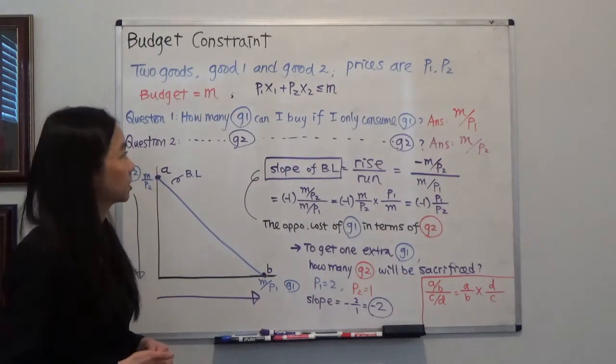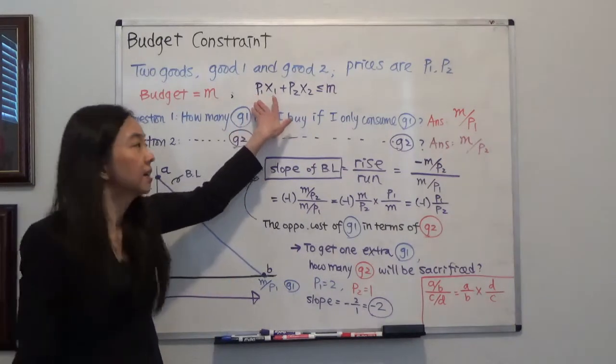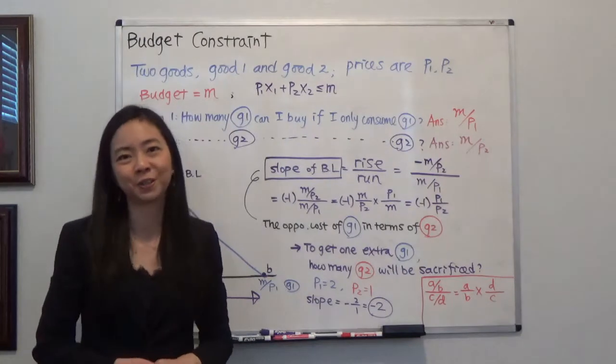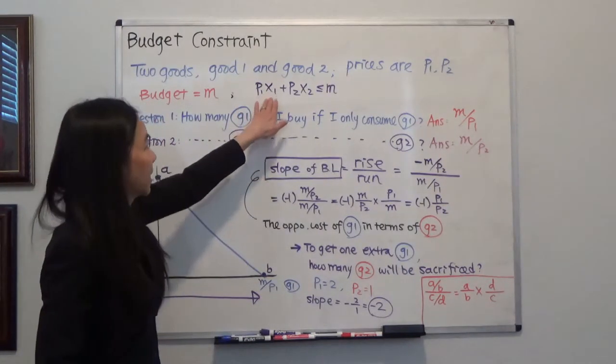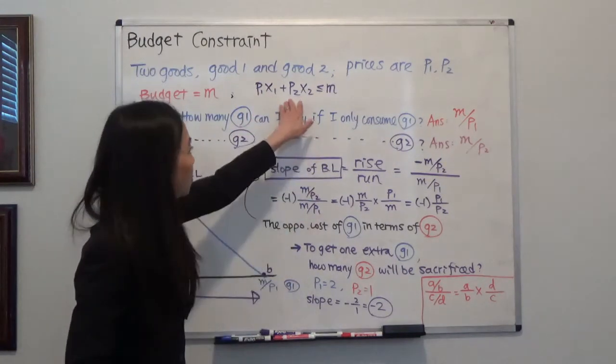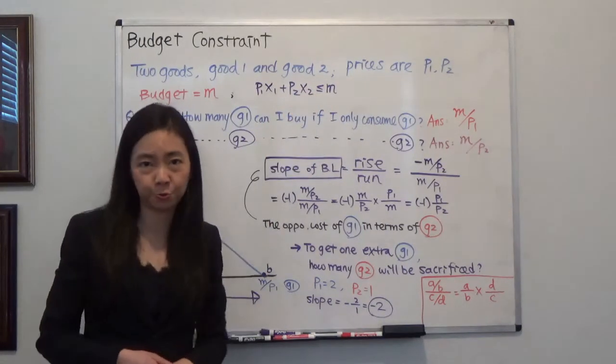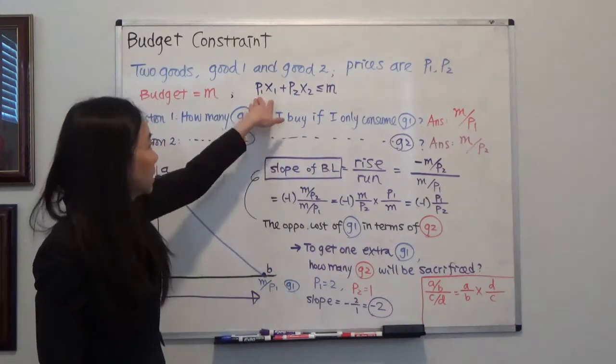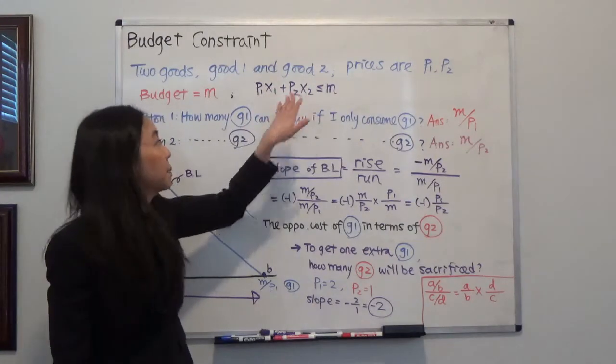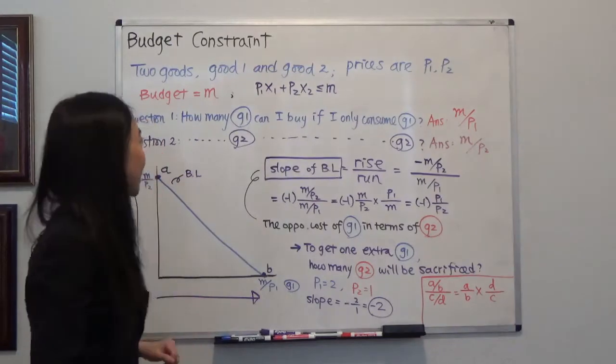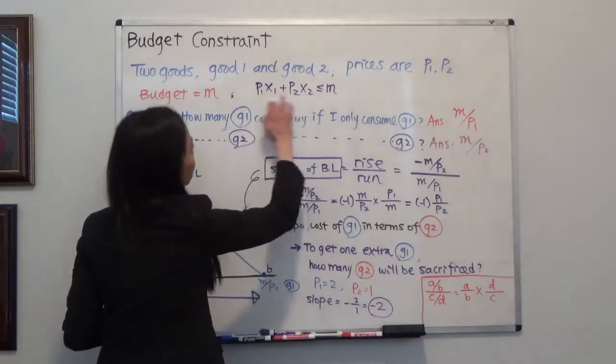Your budget constraint is P1 times x1. x1 is the number of good one you're going to purchase. So P1 times x1 plus P2 times x2. x2 is the number of good two you're going to purchase. P1x1 plus P2x2 must be less than or equal to your budget M. We're going to draw this budget line.